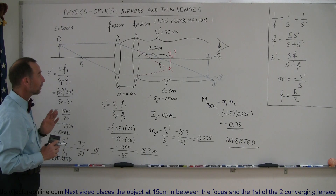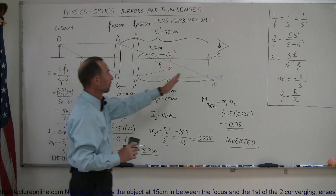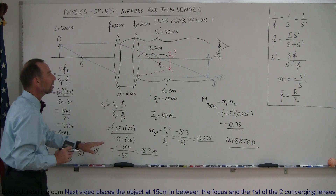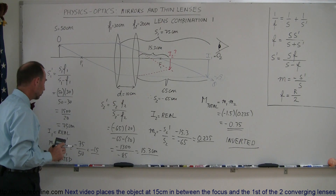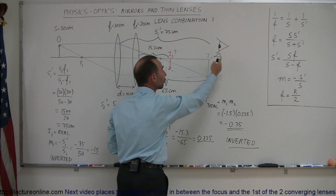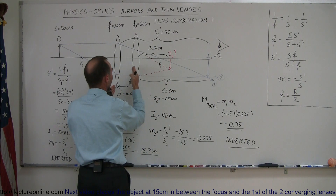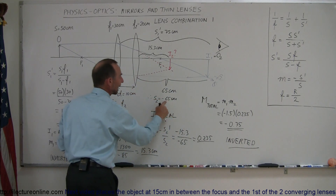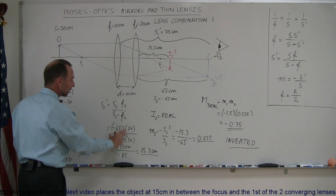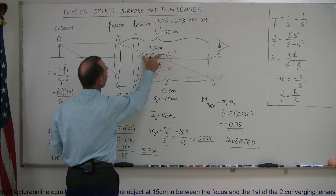A quick review: you find the first image by totally ignoring the second lens — just act as if there's only one lens. You run through the equations, find the image distance for image 1. You find that it's real because it has a positive image distance, and find the magnification, which in this case was a little larger than the original object. Since the magnification was negative, the first image was inverted. Then you call the first image the object of the second lens. You find the distance by taking 75 centimeters and subtracting the 10 cm separation, giving 65 centimeters. Since the object is behind the second lens, that's a negative object distance. You use the same equation with subscript 2 and get image 2 forming 15.3 centimeters behind the second lens — a real image.